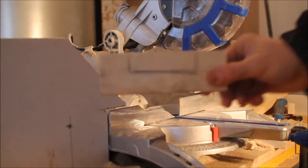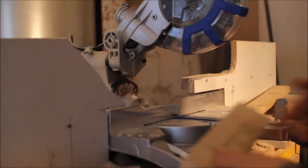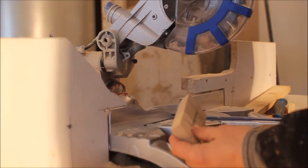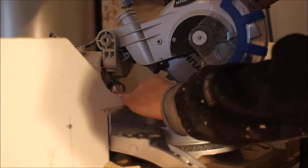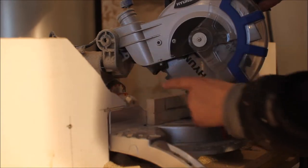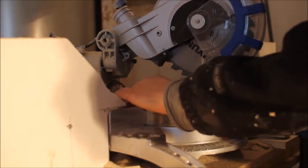After you've drawn the outline of the slot, you set the miter saw to 15 degrees. And then you make some slots every five millimeters or so, like this.